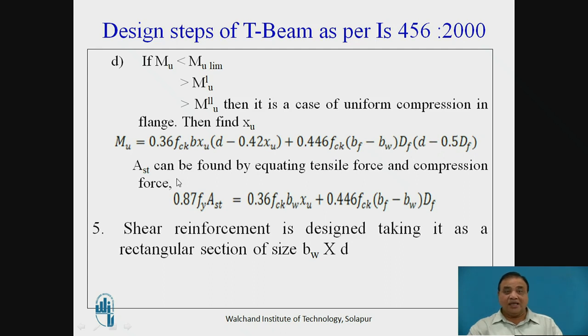AST can be found by equating tensile force and compression force that is 0.87 FY AST it is tensile force and compression force is 0.36 FCK BW into XU plus 0.446 FCK BF minus BW into DF.